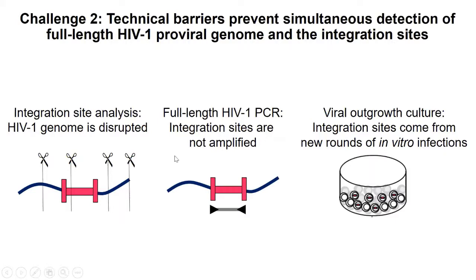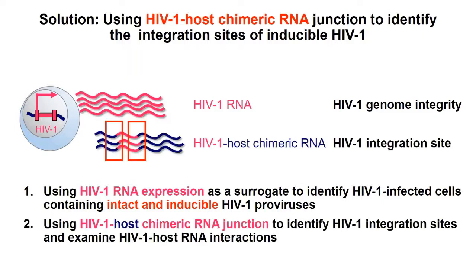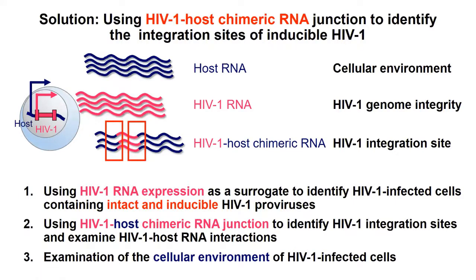People who use viral outgrowth culture to look at clonal expansion find that after two or three weeks, cells undergo new rounds of in vitro infection, so the integration site no longer represents what we see in vivo. The solution is to look at HIV RNA instead. We take HIV-host chimeric RNA junctions as our indicator to identify HIV-infected cells. First, we use the expression of HIV RNA as a surrogate to find these cells. Second, we find the genes into which HIV is integrated using these chimeric RNA junctions. And we can also look at the cellular environment because these cells express RNA.